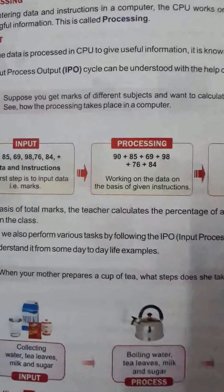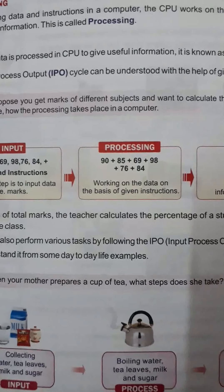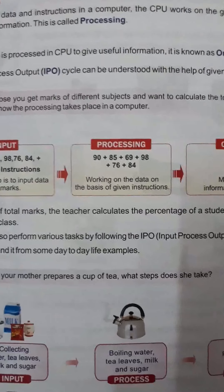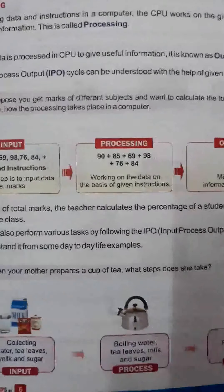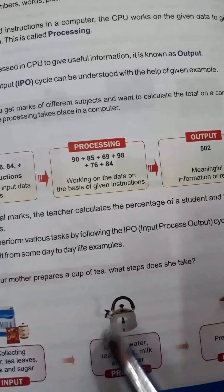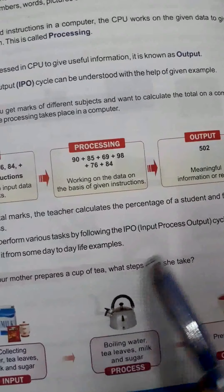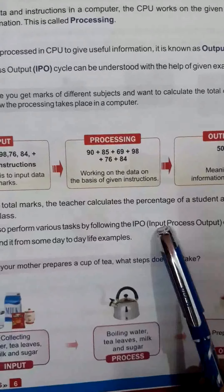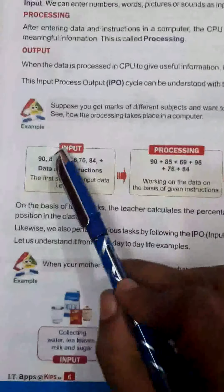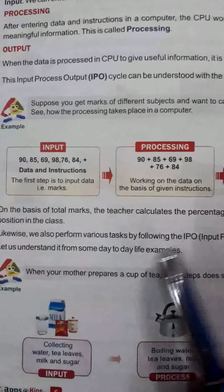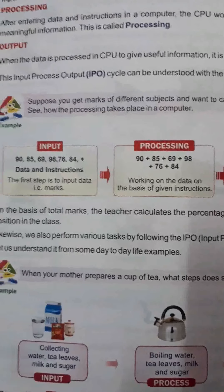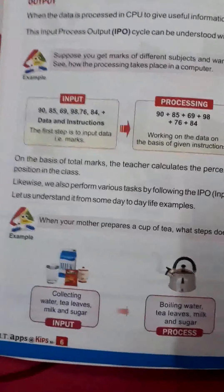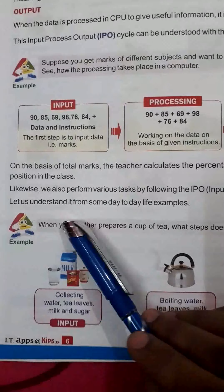Similarly, on the basis of your marks, your teacher also calculates the percentage, and after that she can find which student is in which position in the class. So we also perform various tasks by following the IPO cycle — IPO stands for Input, Process, Output. First input is done, then processing happens, and then we get output.